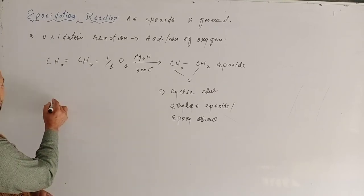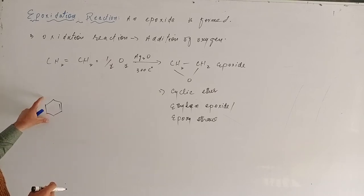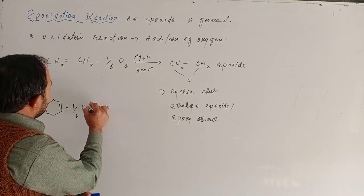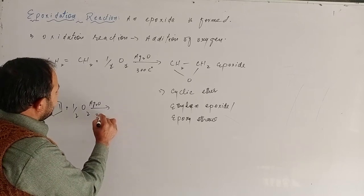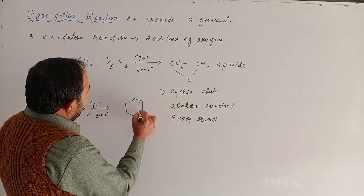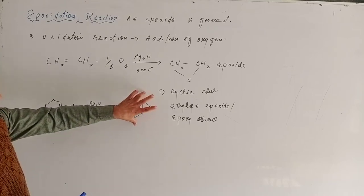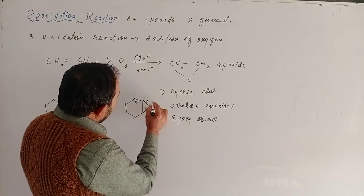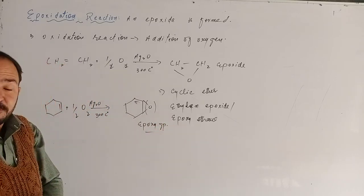We are going to take a cyclic alkene for our second example. We call it a cyclic alkene, and we will show how epoxidation occurs with it.